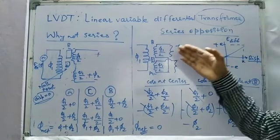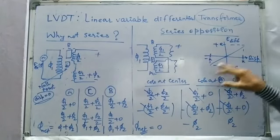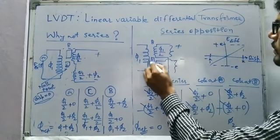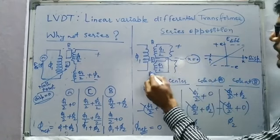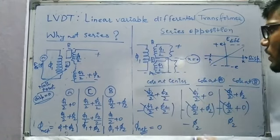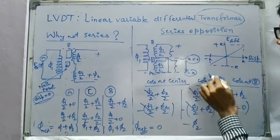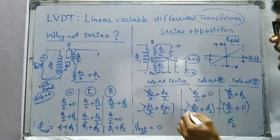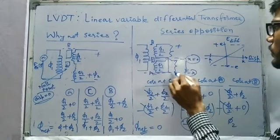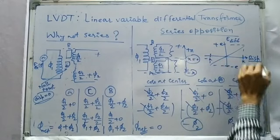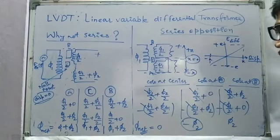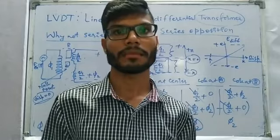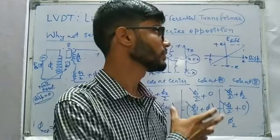By moving the ferromagnetic core between the primary and secondary windings in a linear fashion, we get a linear output voltage varying from −e to +e. Taking x = 0 as the reference null point, if the core is at position A (negative displacement −x), we get a negative net flux and negative output voltage. If the core is at position B (positive displacement +x), we get positive output voltage +e.